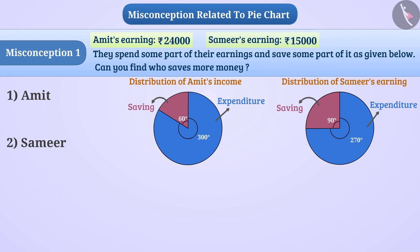Here, the money Amit has saved is represented by an angle of 60 degrees, and the money Samir has saved is represented by an angle of 90 degrees. Some children compare angles and conclude that Samir saves more money than Amit, selecting option 2, which is a wrong answer.